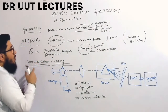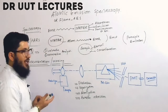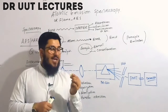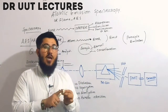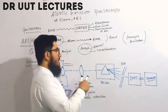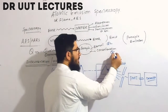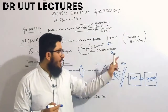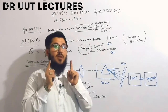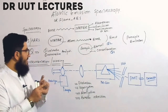Why do we use atomic emission spectroscopy? Because we want to do analysis, and analysis is of two types — qualitative and quantitative. If you take a sample and find what kind of elements are present in it, that is qualitative analysis. If you find the concentration of a specific element, that is quantitative analysis. By means of this spectroscopy, we can do both types of analysis.